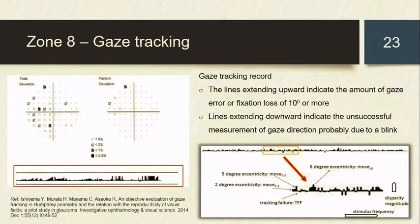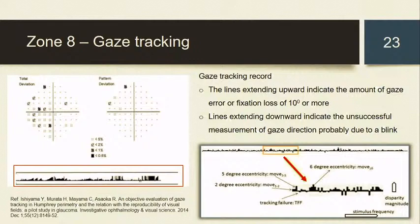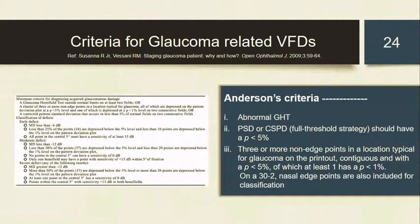Zone 8 shows the gaze tracking signal. HFA has an installed gaze tracking system that continuously monitors the direction of the patient's gaze. Lines extending upward in the signal indicate gaze error or fixation loss of 10 degrees or more; lines extending downward indicate unsuccessful measurement of gaze direction, probably due to a blink. This signal can also be used as a reliability measure for checking fixation stability. Specific to glaucoma, there is a proposed criterion for detecting glaucomatous field loss called Anderson's criteria, which considers the GHT output message, the PSD, and at least three or more non-edge defective points.